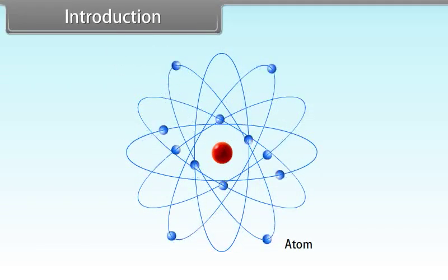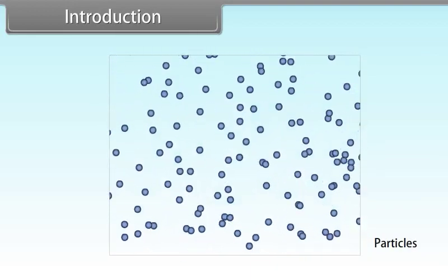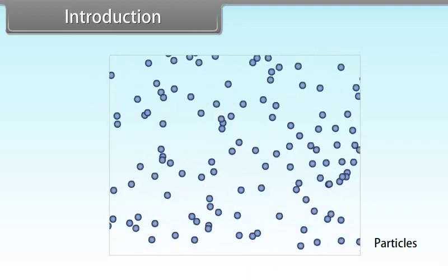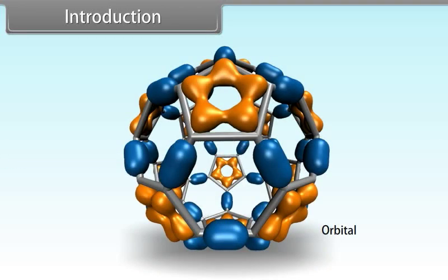Hey kids, today we will learn the quantum mechanical model of atom. Matter has dual behavior — wave as well as particle. Heisenberg's uncertainty principle is only applicable to small particles such as electrons. The region of the atom where the probability of finding an electron is maximum is called an orbital. Orbitals are characterized by a set of numbers known as quantum numbers. The energy, size, shape, and orientation of the electron orbital can be specified by the use of three quantum numbers: the principal quantum number, the azimuthal quantum number, and the magnetic quantum number.